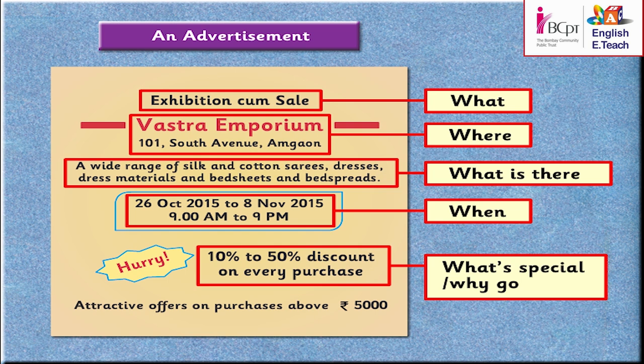Look at the screen now. As in the case of the ticket, an advertisement will tell us about something that is to take place. It will tell you what will be sold there, when it will be held and where it will be held. It will also tell us something like the price of the things to make us go there.